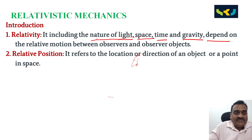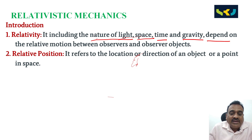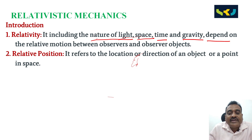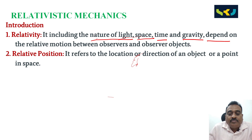What is relative position? The relative position represents the location or direction of an object or point in space in relation to a particular observer or reference point. It is not an absolute position, but it is determined by the observer.